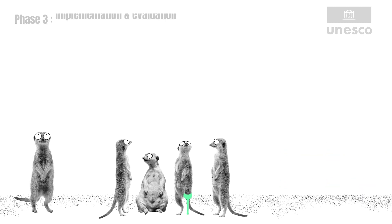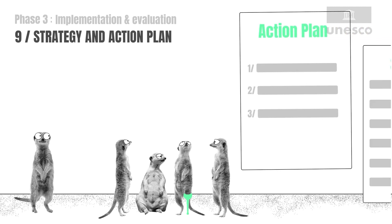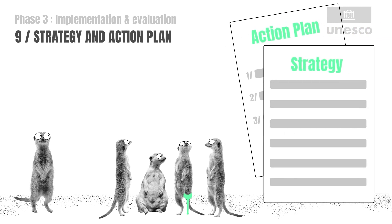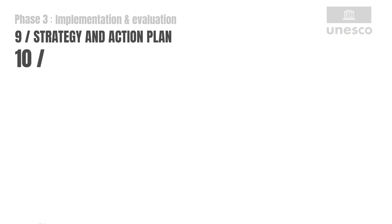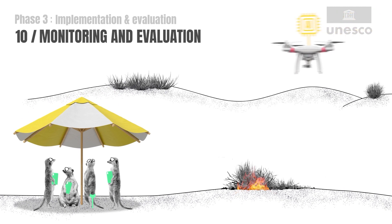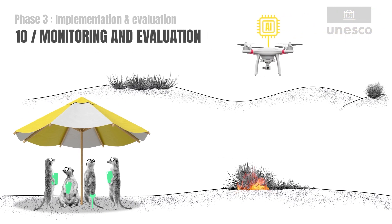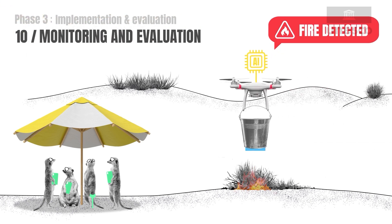Phase 3: Implementation and Evaluation. Building block 9: Combine AI strategy with an action plan. AI development, use, and governance must align with national objectives. Building block 10: Monitor and evaluate throughout the policy cycle. Constant evaluation allows for policy iterations to strengthen and refine plans.